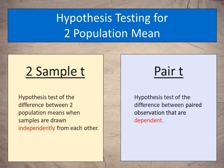Two-sample T is the hypothesis test of the difference between two population means when samples are drawn independently from each other. Pair T test is the hypothesis test of the difference between paired observations that are dependent.